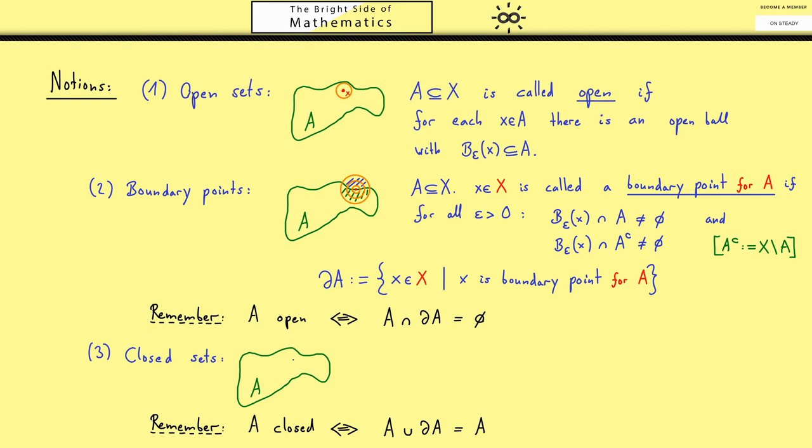A subset A in X is now called closed if the complement in X which is A^c is open. This makes sense because the boundary points of A and the complement are exactly the same. And this just means that all the boundary points belong to A and not A^c.